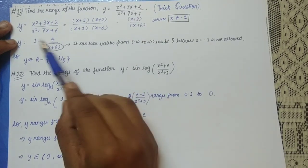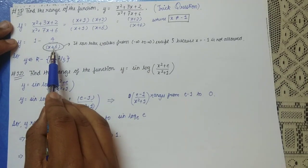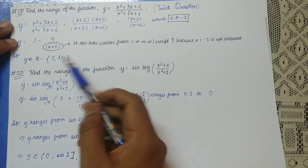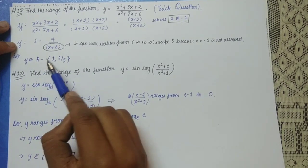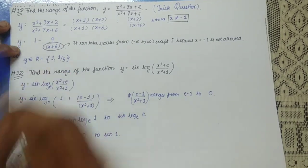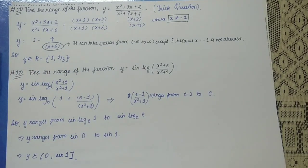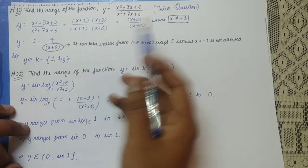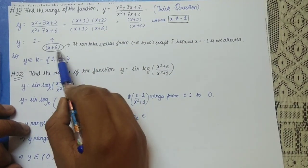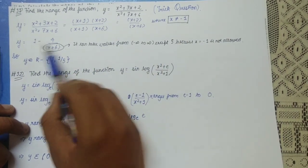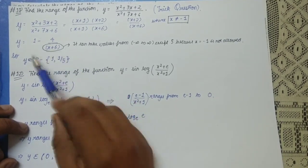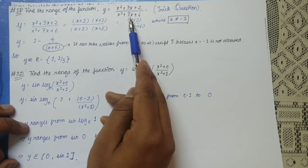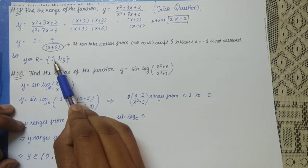We write (x + 2)/(x + 6) = 1 − 4/(x + 6). The term 4/(x + 6) can take any real value, so y ranges over all real numbers. However, y = 1 is excluded because it requires x → ±∞. Additionally, since x ≠ −1, substituting gives y = 1 − 4/5 = 1/5, so y = 1/5 is also excluded. Therefore the range is ℝ \ {1, 1/5}.